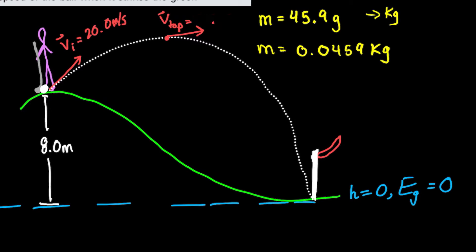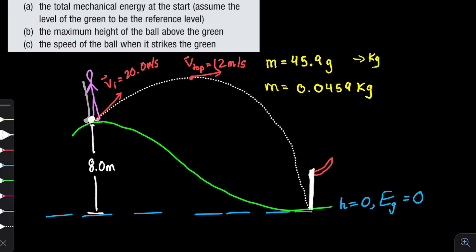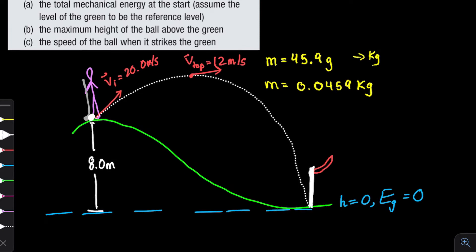I had the wrong value — it should be 12 meters per second at the top. The unknowns we need to find are: the maximum height h_top, the velocity just before the ball strikes the green, and the total mechanical energy at the start, E_mech_initial.